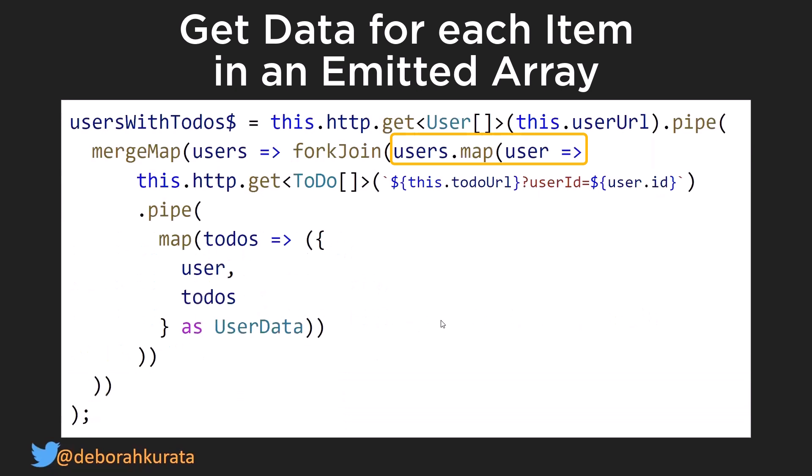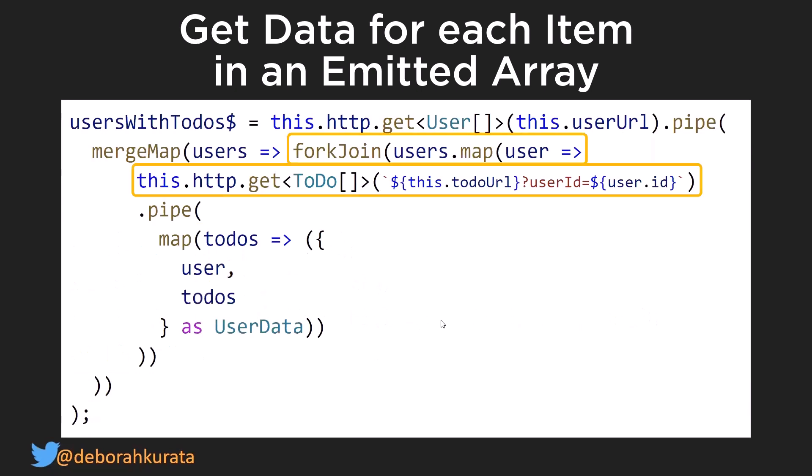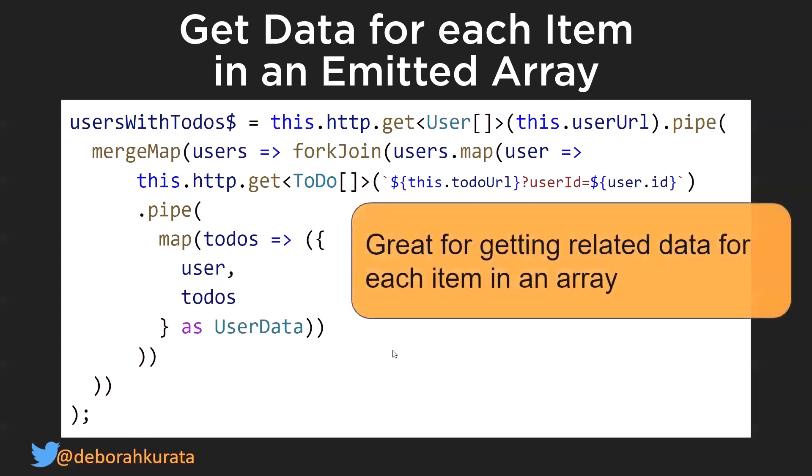I'm taking each of the users that this has retrieved and mapping it using the array map to go get the to-dos for that user and put them into this structure. By using a fork join it will immediately process each one of these, but it will not emit anything until all of them have completed. This will wait for us to get all of the users' to-dos and then return the users with to-dos — it's great for getting related data for each item in an array.